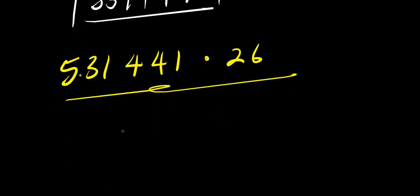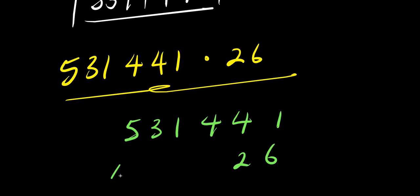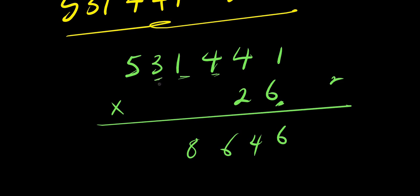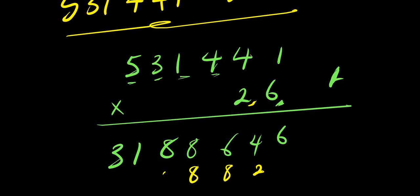How do you do this? All right, let's do it step by step. 531,441 times 26. Starting with 6: 6×1=6, 6×4=24 write 4 carry 2, 6×4=24 plus 2 is 26 write 6 carry 2, 6×1=6 plus 2 is 8, 6×3=18 write 8 carry 1, 6×5=30 plus 1 is 31. Then for 2: 2×1=2, 2×4=8, 2×4=8, 2×1=2, 2×3=6, 2×5=10.